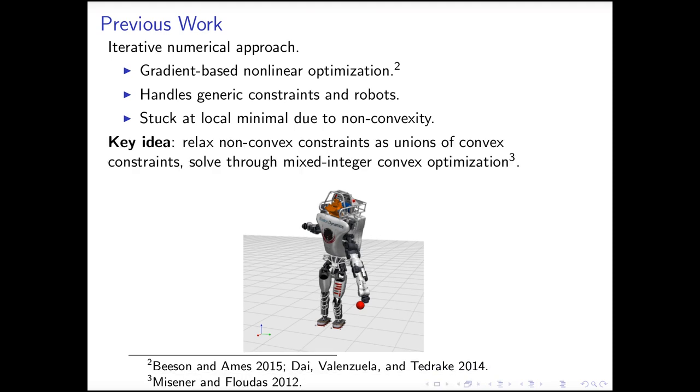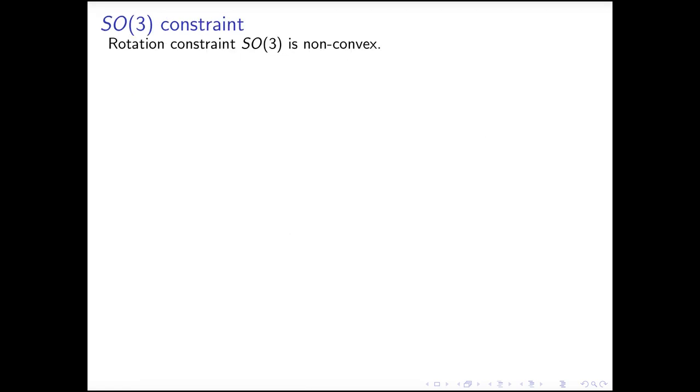The key idea of this paper is to relax the non-convex constraints to a union of convex constraints, which can be solved by mixed integer convex optimization. In the next few slides, I will explain how we shall apply this idea to IK problems. The non-convexity of IK problem originates from the non-convex SO(3) rotation constraints. So we will focus on rotation first.